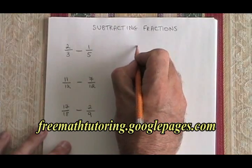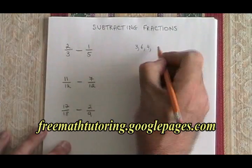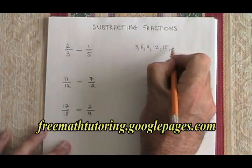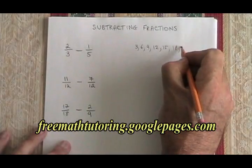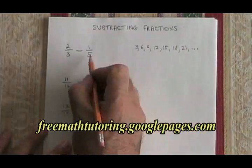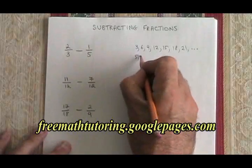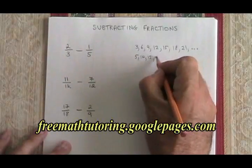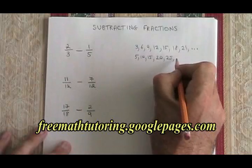The multiples of 3 are 3, 6, 9, 12, 15, 18, 21, and it keeps going. Multiples of 5 are 5, 10, 15, 20, 25. It keeps going.